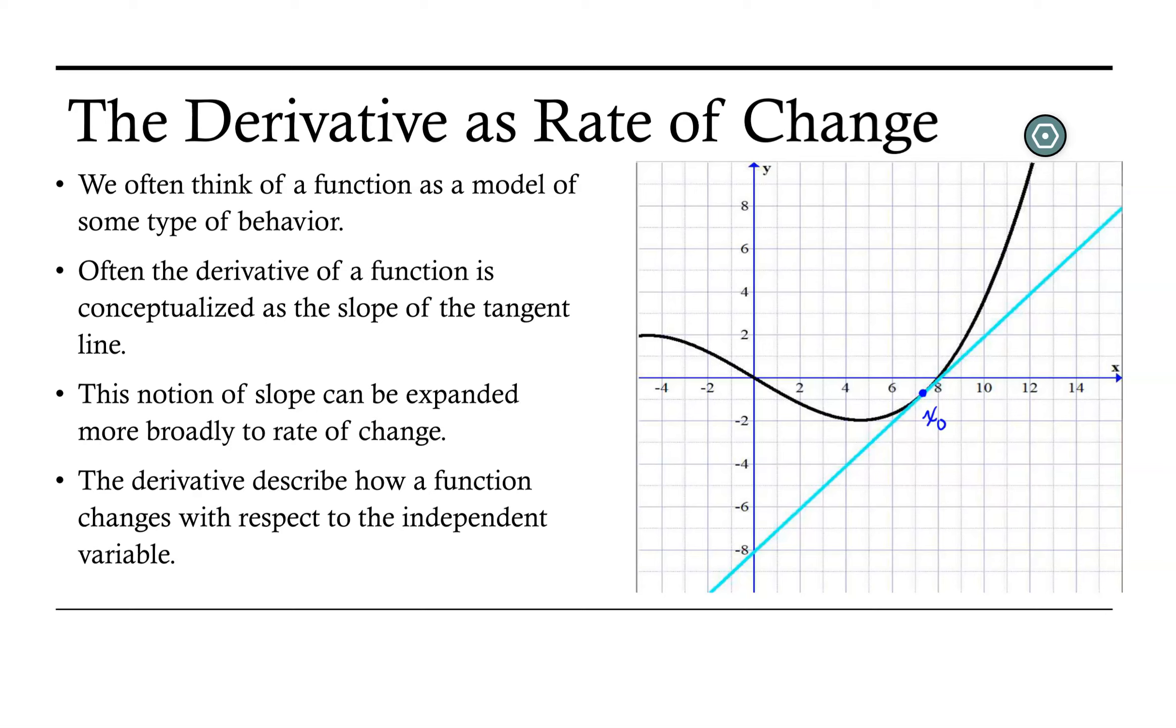But what we can say is that the slope of this tangent line is equal to the derivative of the function that we have here in black at x-naught. Now this notion of slope can be expanded more broadly to represent rate of change.